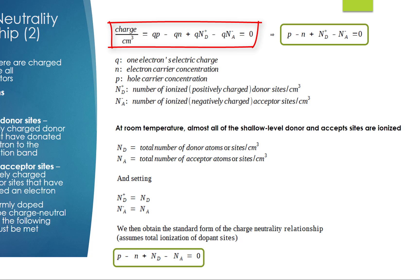Here, Q is the electron's charge quantity. N is the electron carrier concentration. P is the hole carrier concentration. N_D+ is the number of positively charged ionized donor sites per cubic centimeter, and N_A- is the number of negatively charged ionized acceptor sites per cubic centimeter.